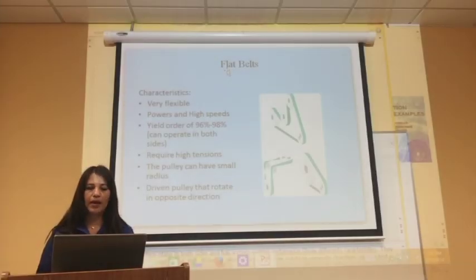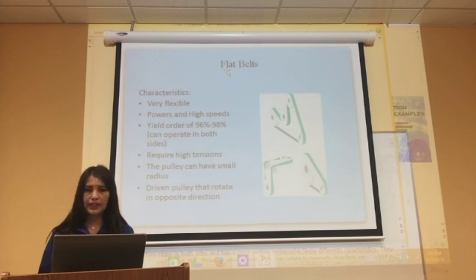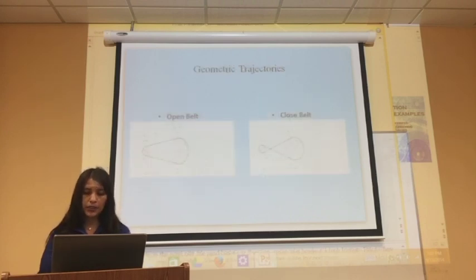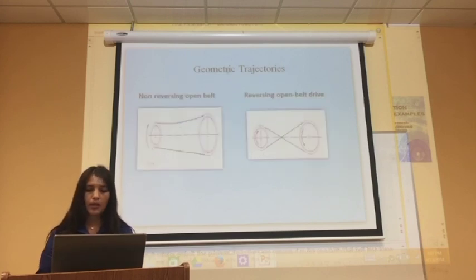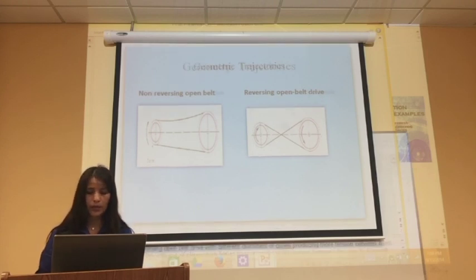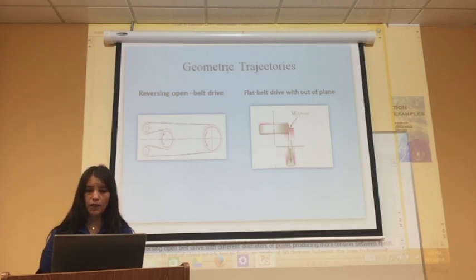Continuing with the presentation, I'm going to talk about flat belts. A flat belt has a planar surface on both sides and a rectangular cross-section. One important characteristic is its flexibility and high efficiency of 98%. It can transmit high power at high speed in a positive direction. Regarding geometric configurations, the open belt rotates in the same direction and produces high friction, while the reversing open belt rotates in only one position. There is also a flat belt drive without a plane, which must form a 90-degree angle between the axes.